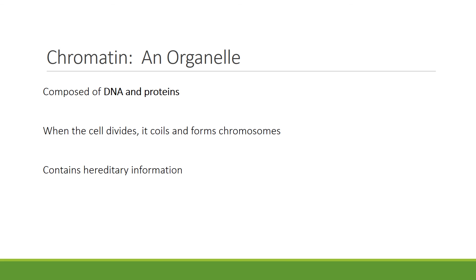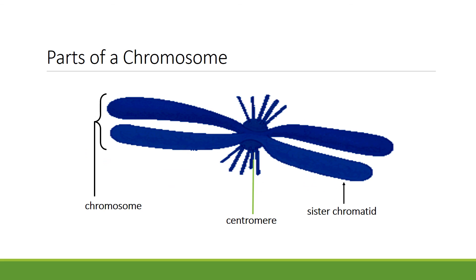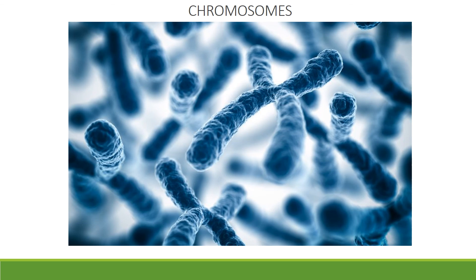Chromatin is a complex of DNA and proteins that forms chromosomes within the nucleus of eukaryotic cells. When the cell divides, it coils, and chromatin becomes chromosomes. These chromosomes contain hereditary information. A chromosome is composed of two sister chromatids that are identical. They are connected in the center by a centromere.